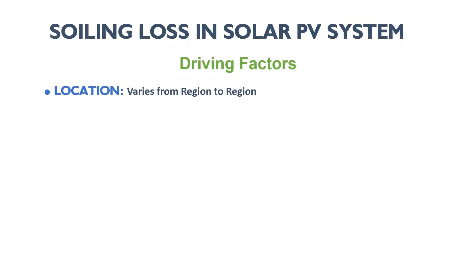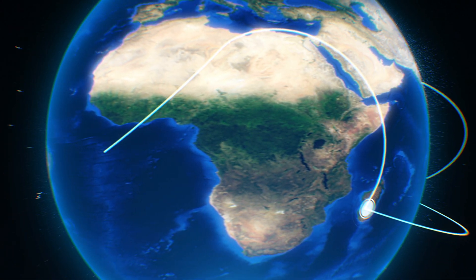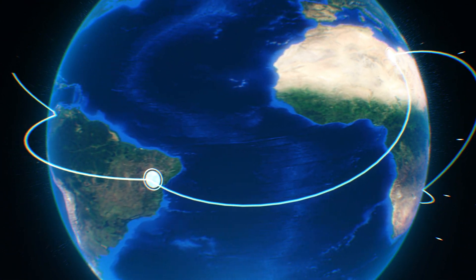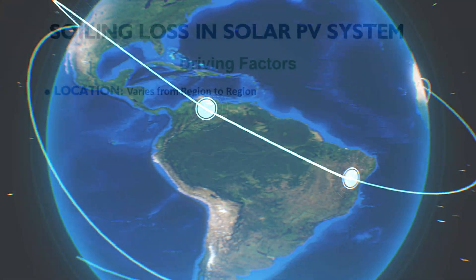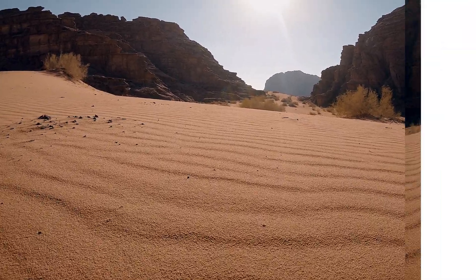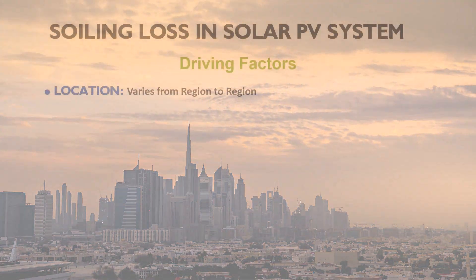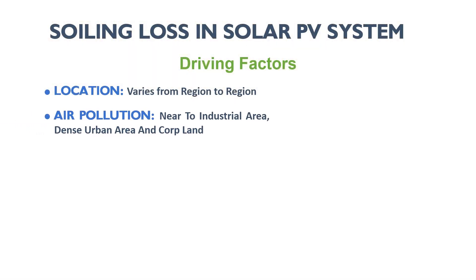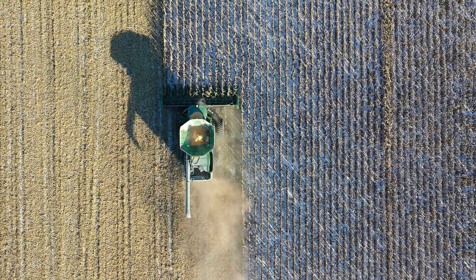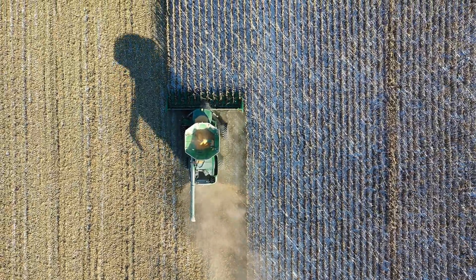The accumulation of dust depends on some major factors and varies region to region globally. For example, the soiling loss profile will not be the same for Germany and Qatar — in Qatar, due to nearby desert lands, dust particle levels in the air are much higher than in Germany. The next factor is air pollution level, which is not the same everywhere. Near agricultural areas, during crop harvesting season, the rate of soiling increases rapidly.